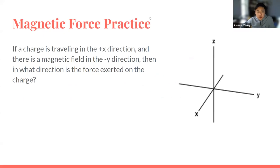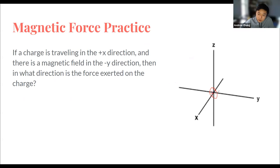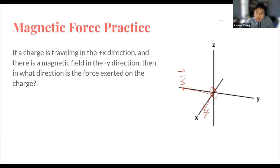For some practice: let's say a charge is traveling in the positive x direction, it's a positive charge, and there's a magnetic field in the negative y direction. What direction will the force be? You can type in chat and have some time to figure out how to orient your hands. The classic joke among high school physics teachers is that you can always tell when students are doing these problems because they'll be making weird hand motions to figure out the direction of the forces.